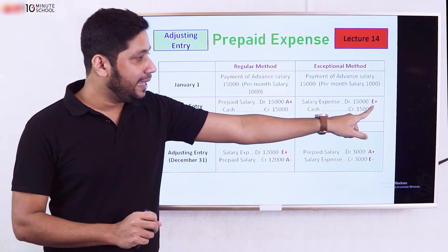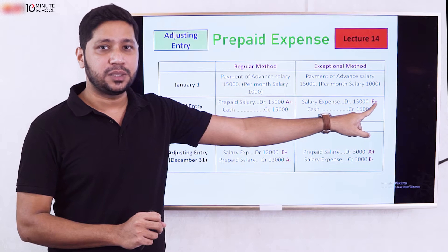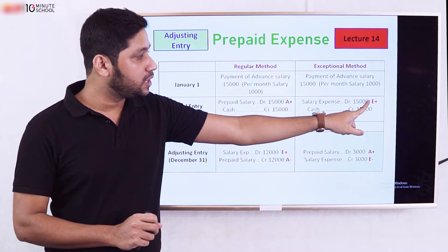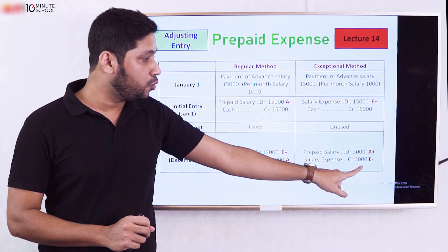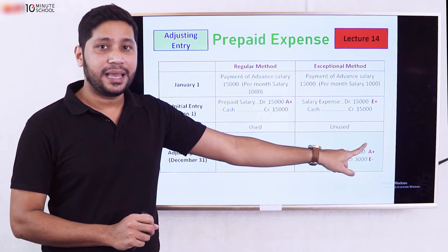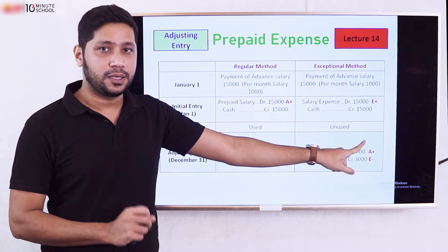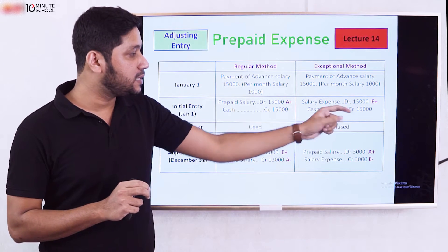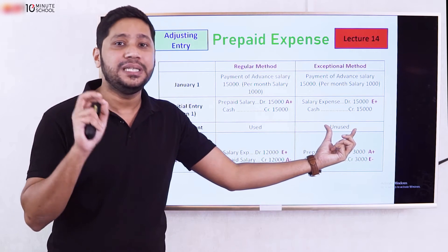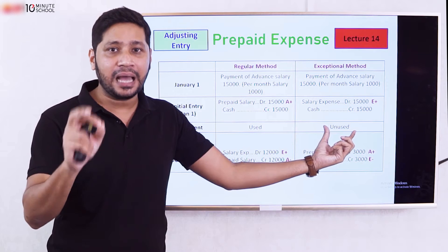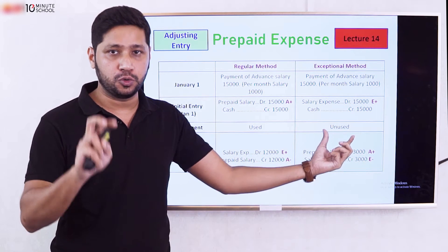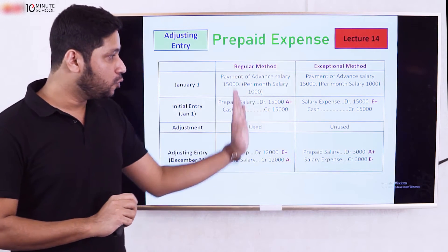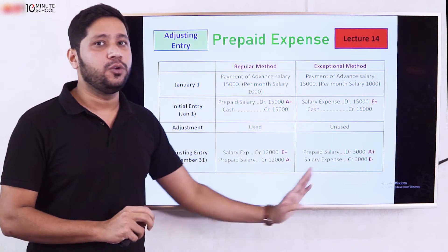Initially we treat the advance payment as either an asset or an expense. The unused portion remains as an asset — Prepaid Salary. The used portion is the expense. Let's make a brief summary of this concept.